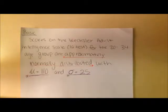The question is asking us: Scores on the Wechsler Adult Intelligence Scale, or Standard IQ test, for the 20-34 age group are approximately normally distributed with a mean at 110 and a standard deviation at 25.